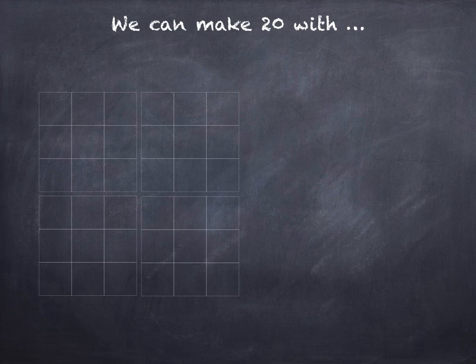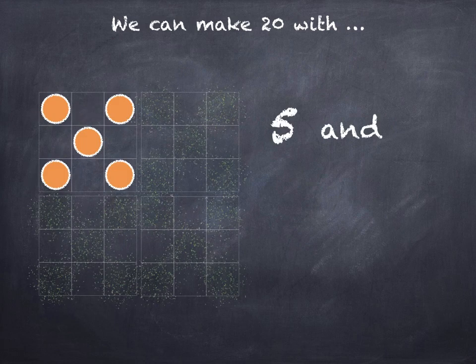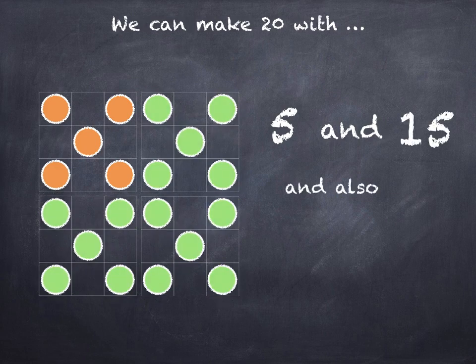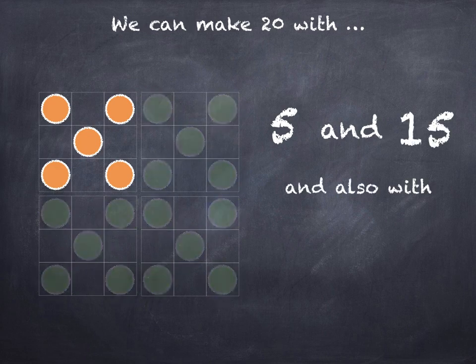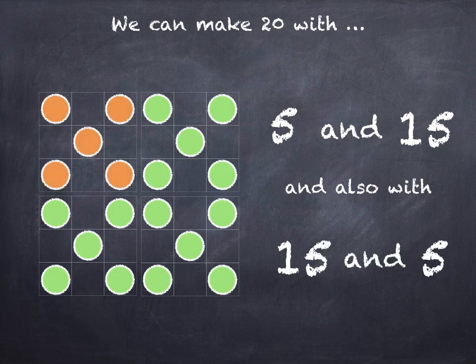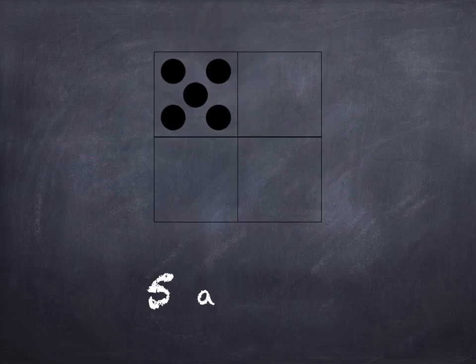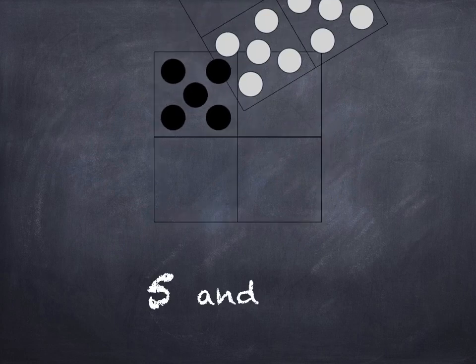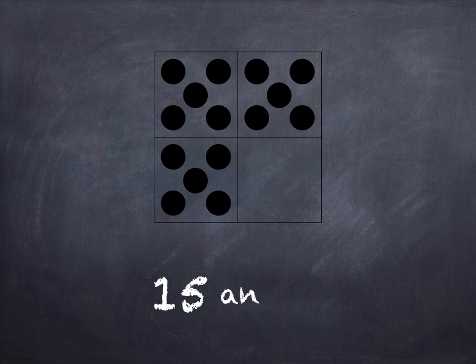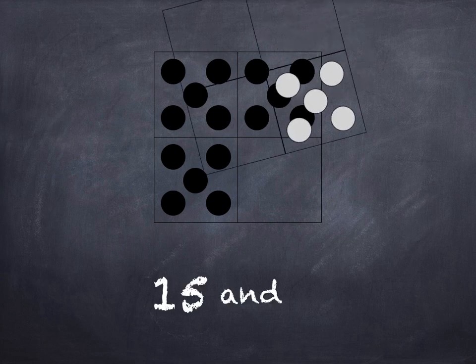We can make 20 with 5 and 15, and also with 15 and 5.